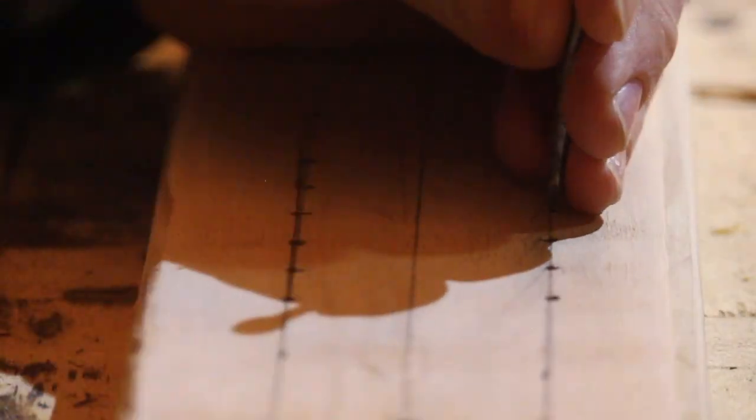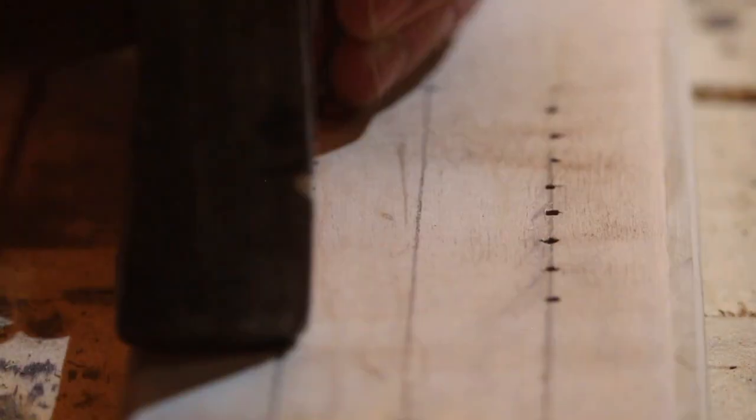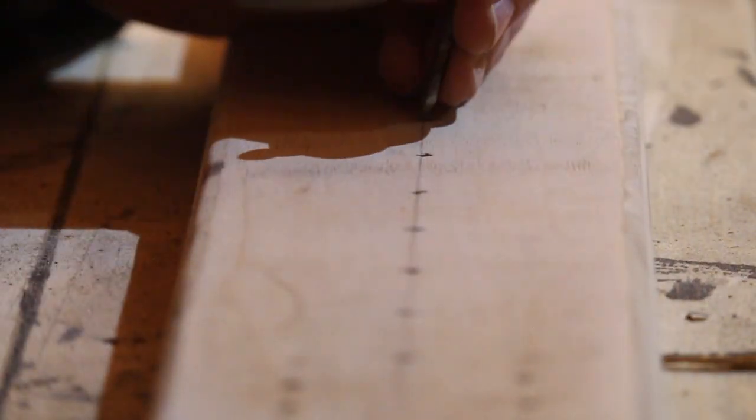At this point we've got the entire jig marked out, so if you're gonna use nails go ahead and start nailing in your nails in every location you marked. If you're gonna use dowels like me, I just used a nail to kind of punch where I wanted to pre-drill so that I could try to keep my lines as straight as possible.